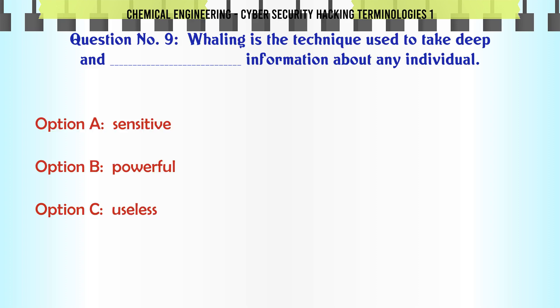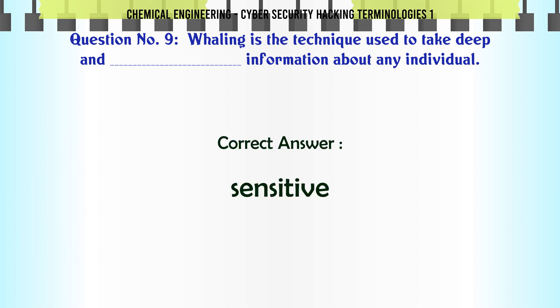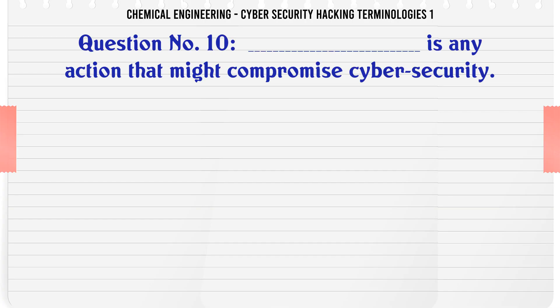Whaling is the technique used to take deep and sensitive information about any individual. A. Sensitive B. Powerful C. Useless D. Casual. The correct answer is Sensitive.